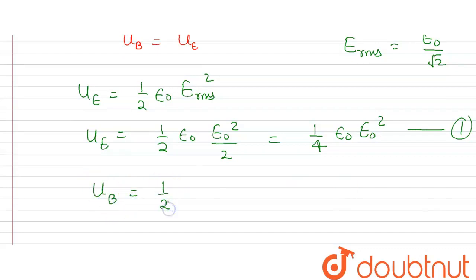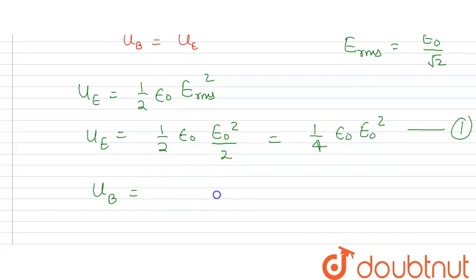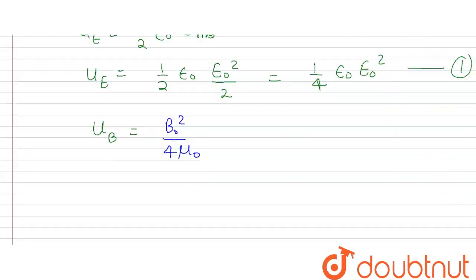Similarly, the energy density of the magnetic field is equal to B₀² divided by 4μ₀.